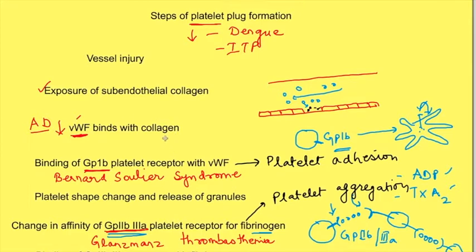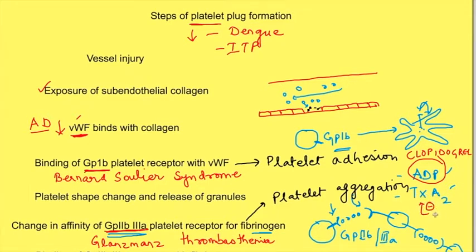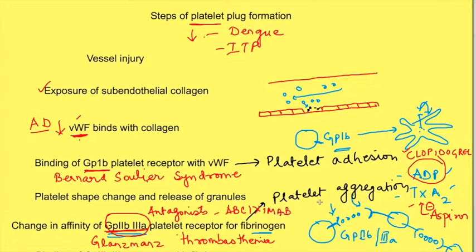There may also be diseases in which excessive platelet plugs are formed. By knowing these mechanisms, we can inhibit this process using drugs. ADP receptor antagonists like clopidogrel block the ADP pathway. Aspirin blocks the formation of thromboxane A2. There are also GP2B3A receptor antagonists, such as abciximab, which interfere with platelet aggregation. When giving these drugs, their dose must be monitored, otherwise they will block necessary platelet plug formation and cause bleeding.